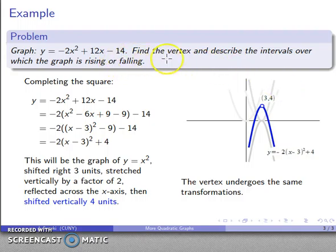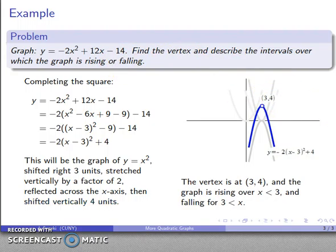So now I know where the vertex is located. It's located at 3, 4. And that vertex is going to be where the graph changes directions. And if I look at the graph, I see that the graph is rising until I hit x equals 3. And then it's falling afterwards. So the graph is rising for x less than 3. And it's falling for x greater than 3.